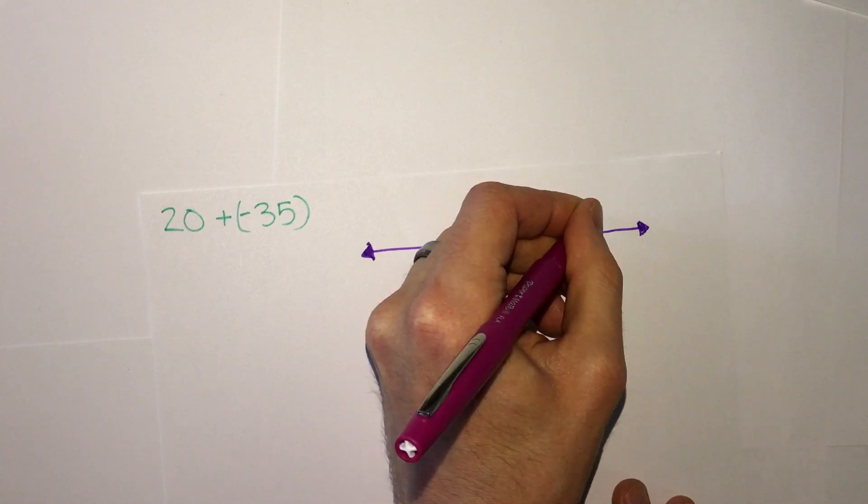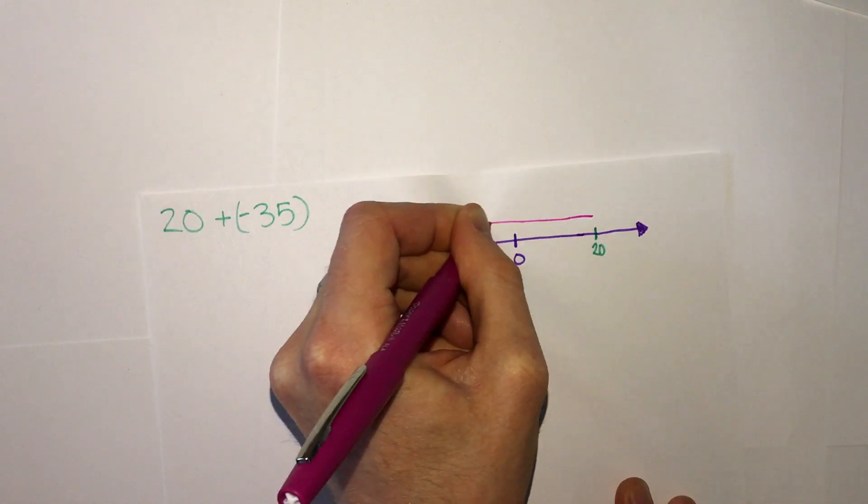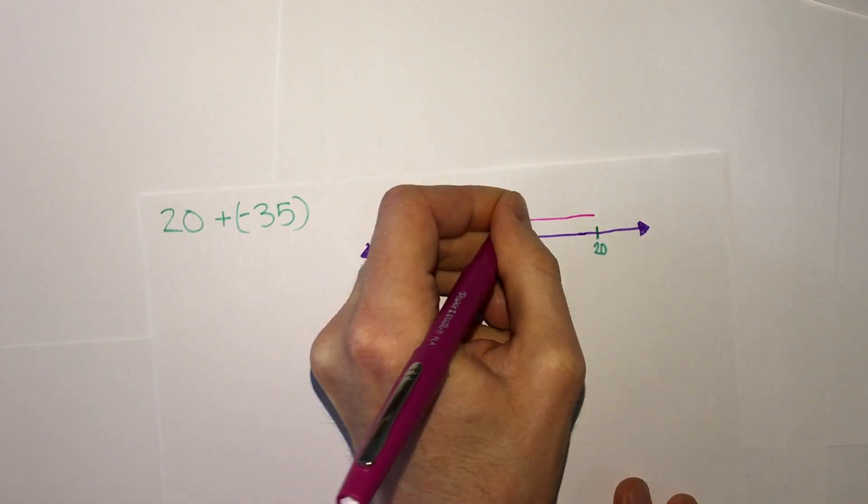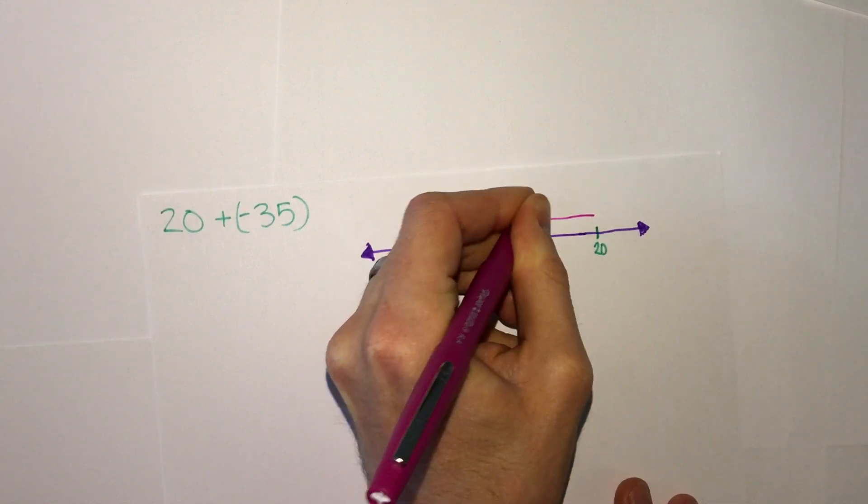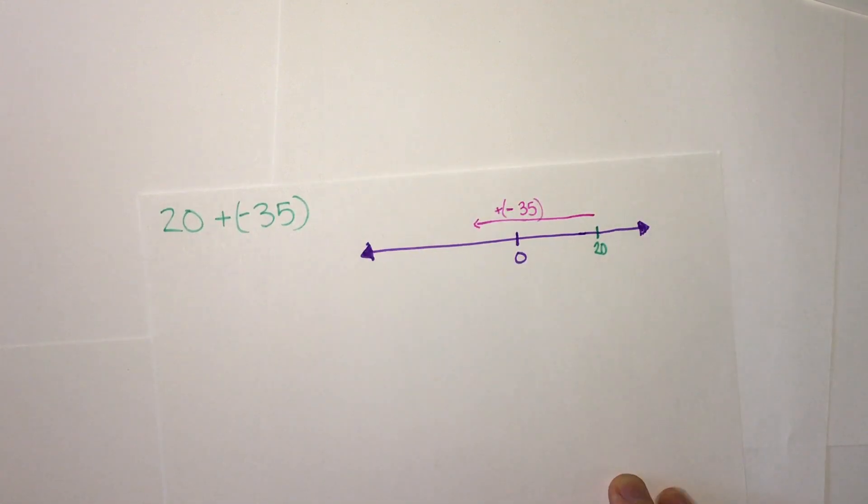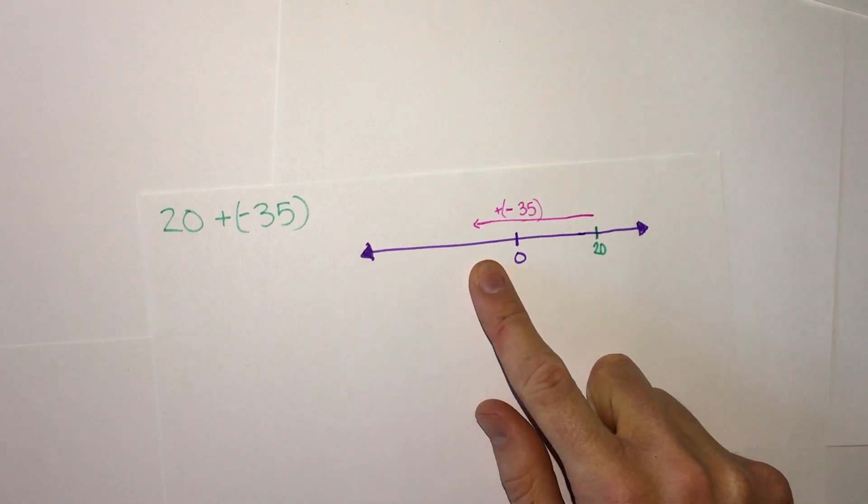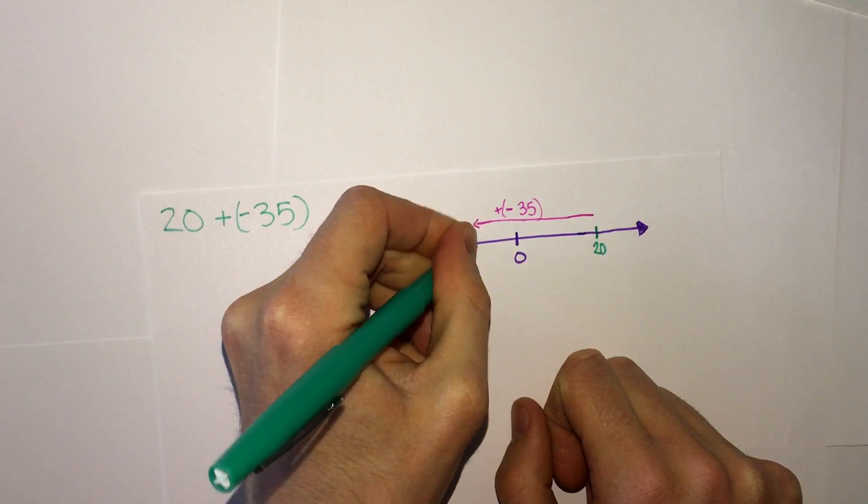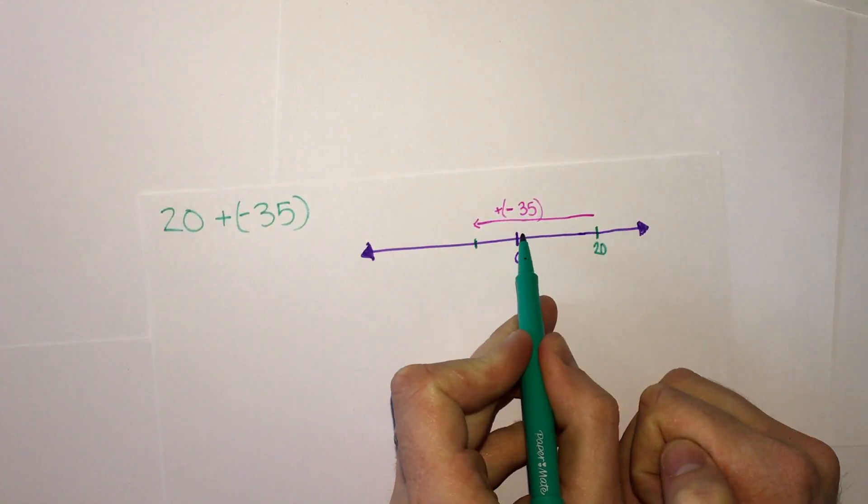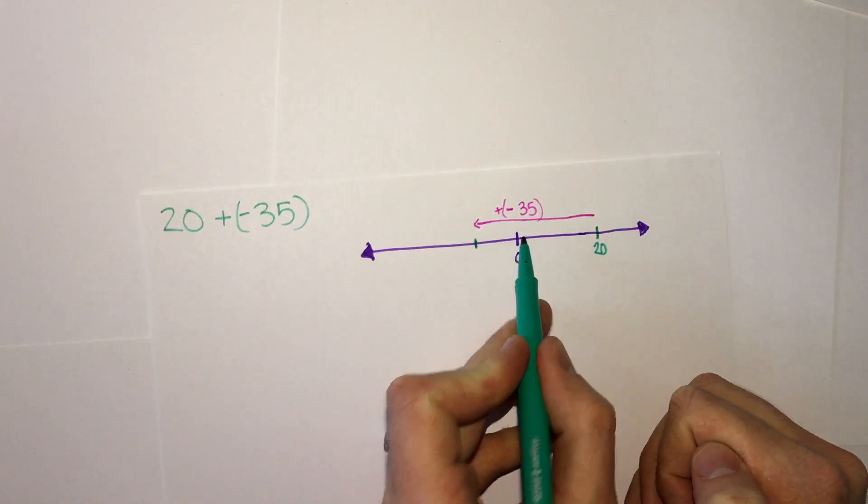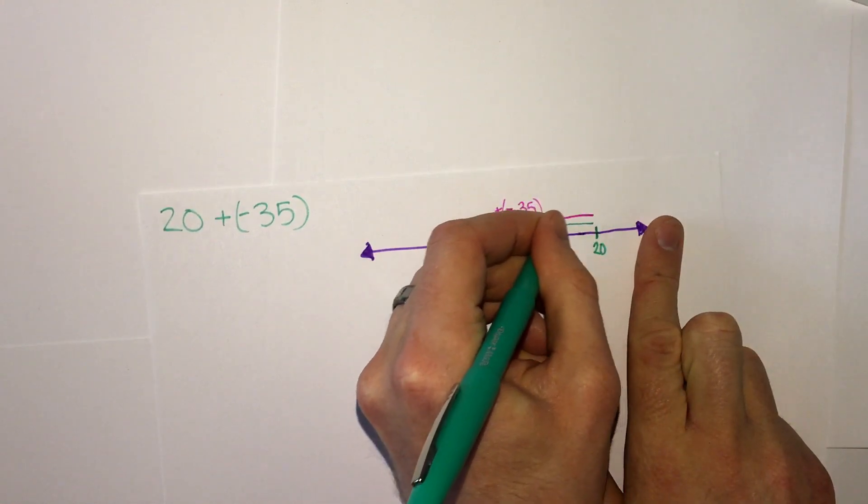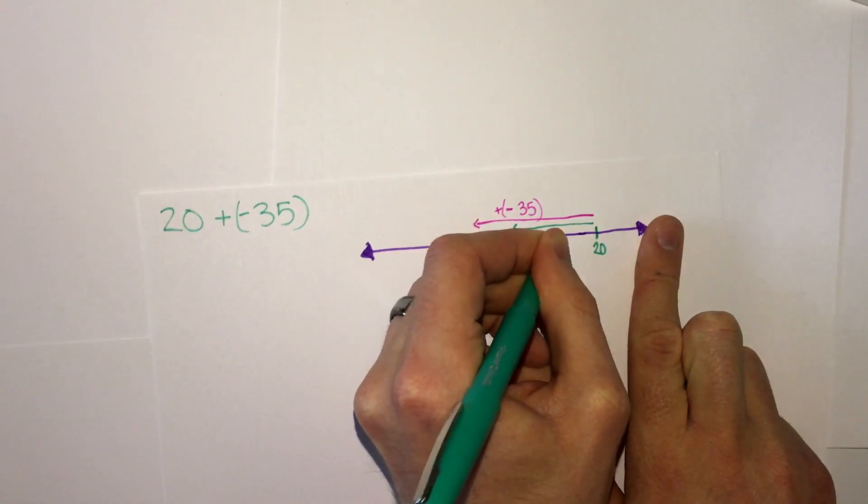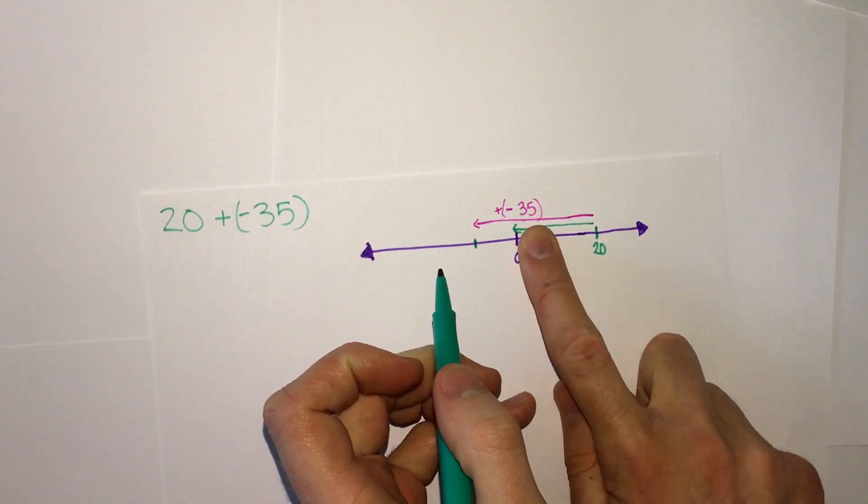So that means we're going to go left from 20, 35. So plus negative 35, how can we count where this is going to end up? Well, we can look and see, first, how far does it take for us to get from 20 to 0? That's 20. So this takes away 20 of our 35.